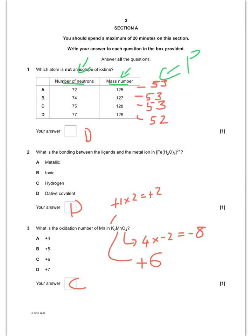So what is the type of bonding between ligands and metal iron? Well, hopefully you know that is dative covalent bonding, which is D.